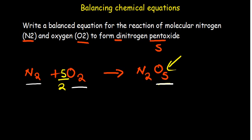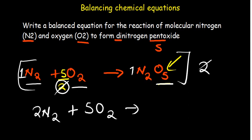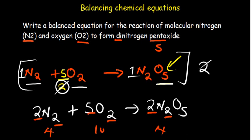When balancing equations, we need whole-number coefficients, so multiply the entire equation by 2 (the denominator). The coefficient on N₂ becomes 2, the 5/2 on O₂ becomes 5, and the coefficient on N₂O₅ becomes 2. Verifying: nitrogen — 2×2=4 on each side; oxygen — 5×2=10 on the left, and 2×5=10 on the right. The equation is balanced.